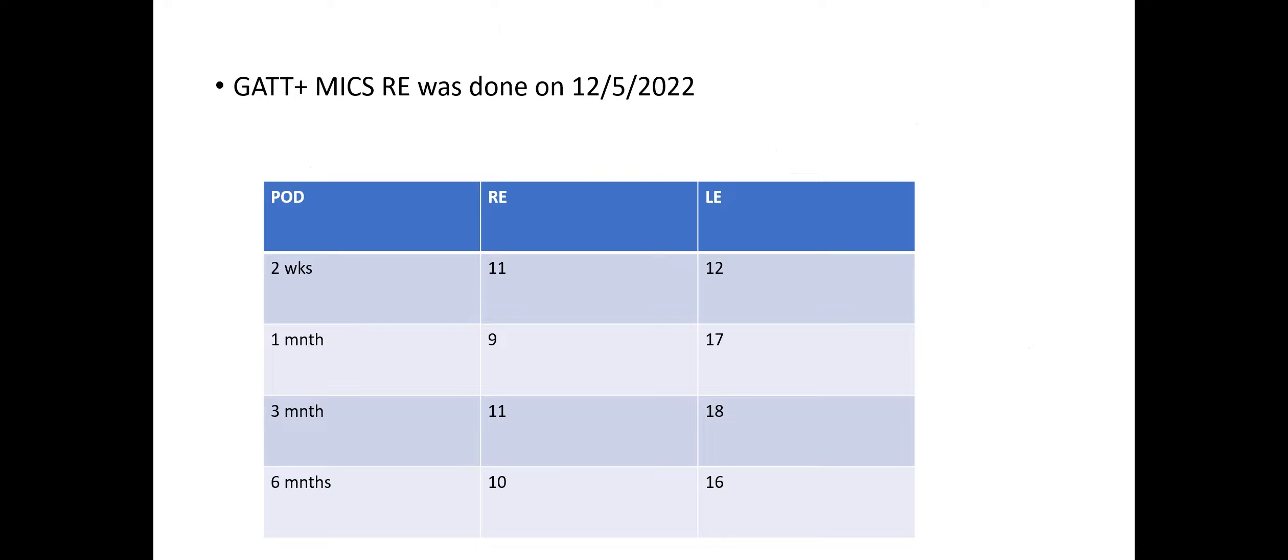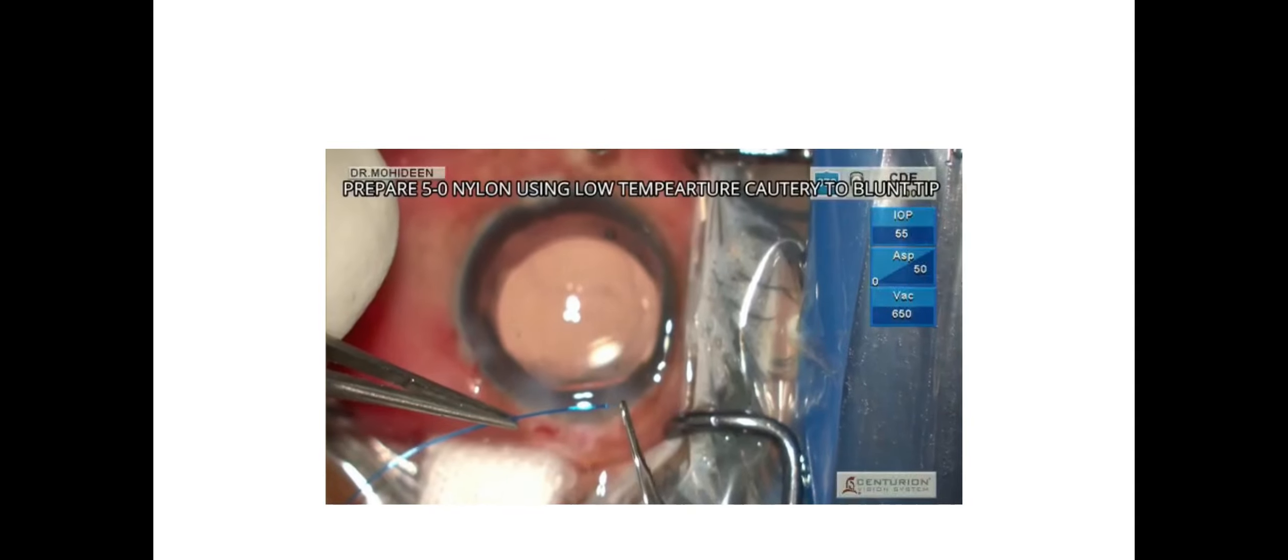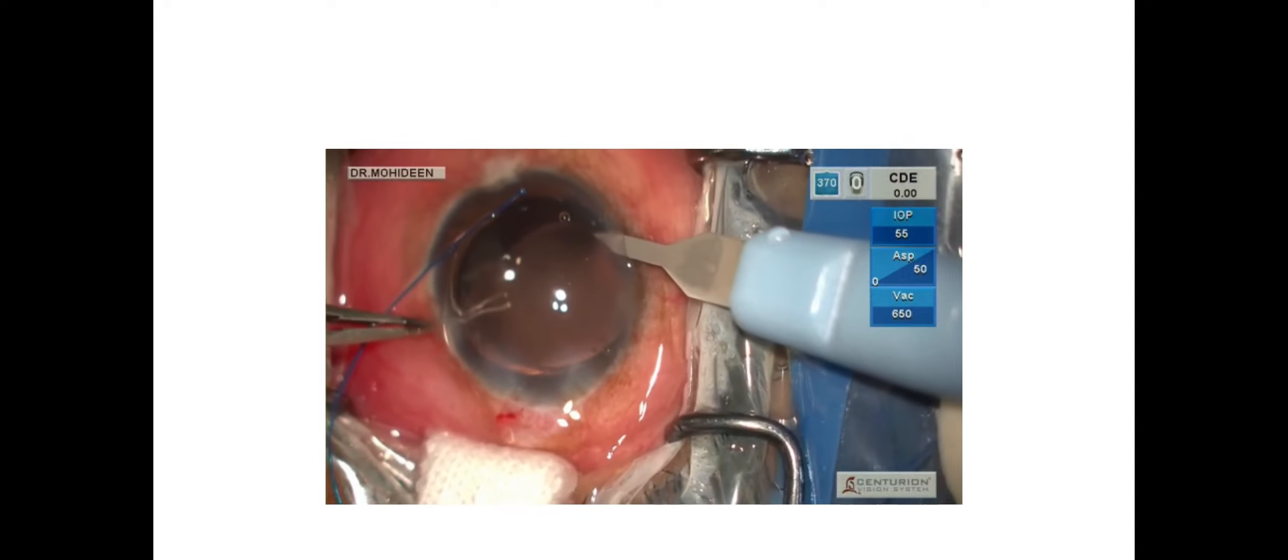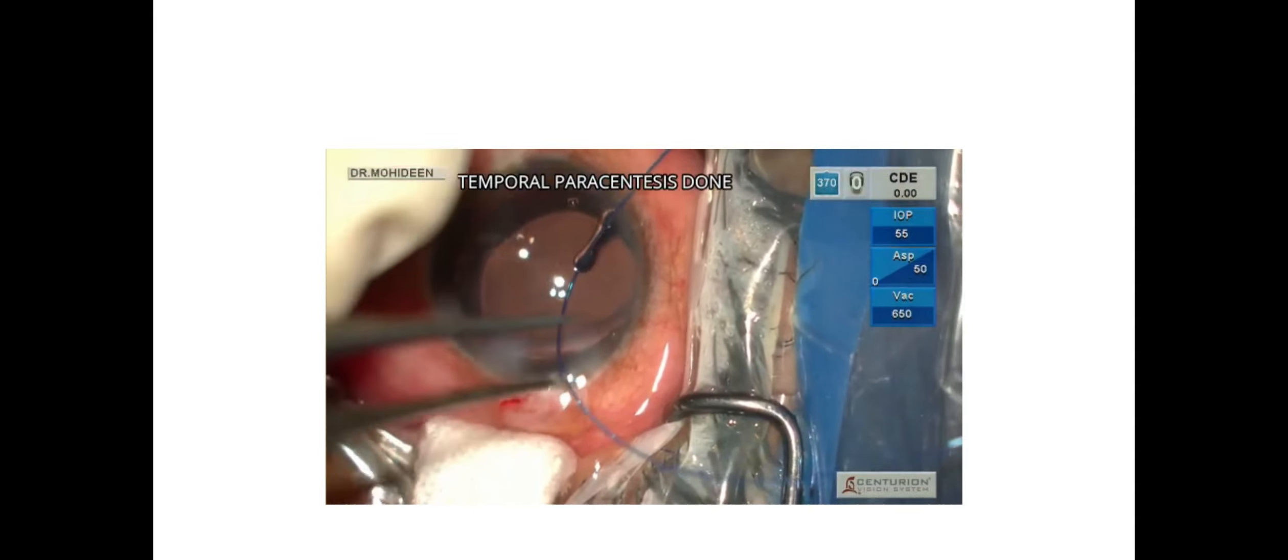This patient underwent gonioscopy-assisted transluminal trabeculotomy with phacoemulsification in the right eye and the intraocular pressure control was really good. This is a video showing the GATT procedure being performed in the right eye of the patient.